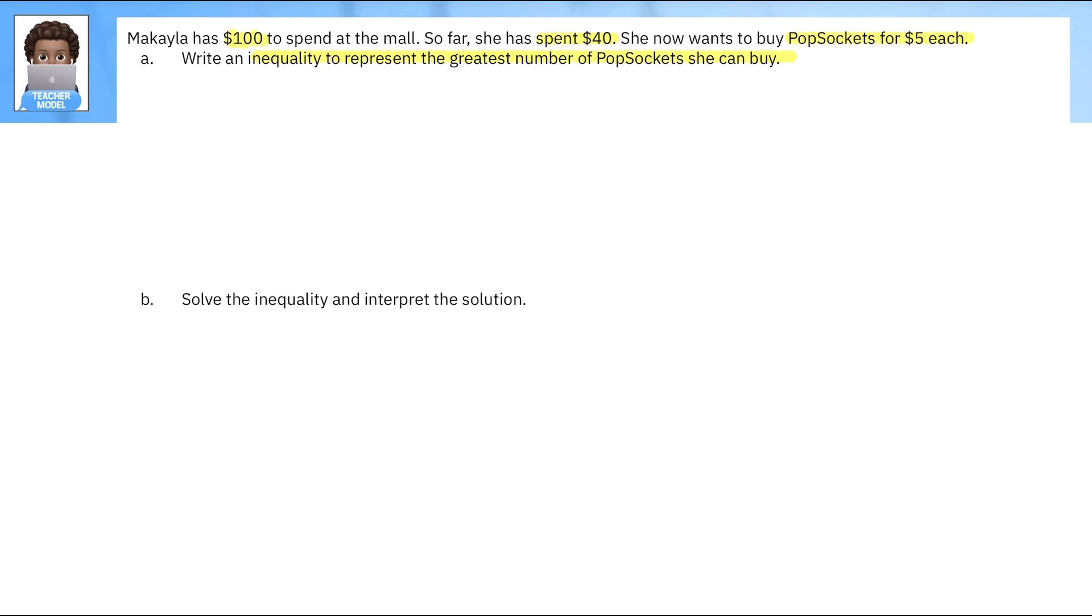Okay, so what do we know? What is the limiting factor here? We know that she has $100 and we know that that has to be the most she can spend or she can exactly spend that. So the $100 has to be greater than or equal to what she spends. And we know that she already spent $40 and she can buy the popsockets for $5 each. So since we don't know how many she can buy, we're going to let X equal the number of popsockets purchased.